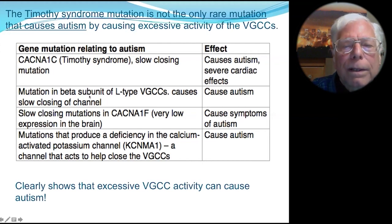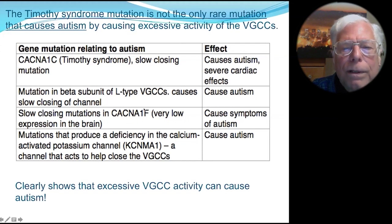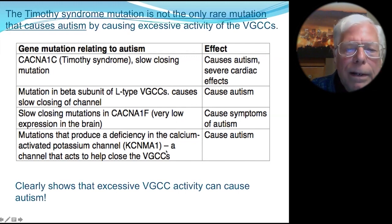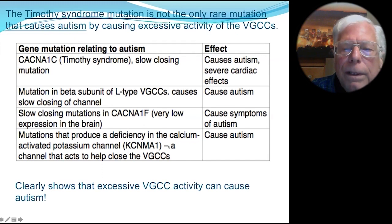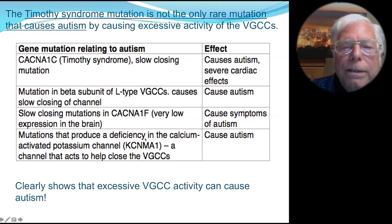There are mutations in a different subunit of the VGCCs that can also cause slowing of the channel. Another one of these VGCCs has very low expression in the brain, but when you get very slow closing of it, it causes symptoms of autism rather than full-fledged autism. There's another channel that indirectly affects these calcium channels and can also have roles in causing autism. All of these are genetic studies that clearly demonstrate causation.